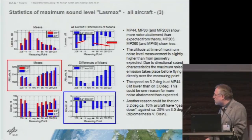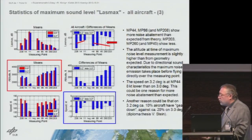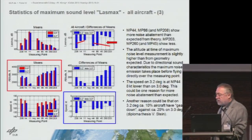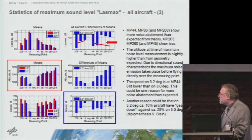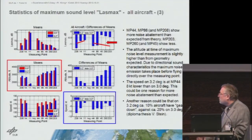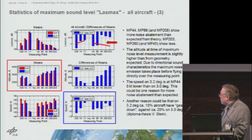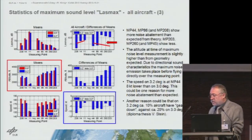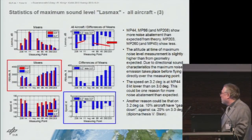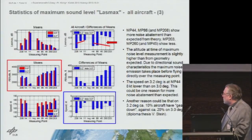We then tried to calculate the speeds. When using the 3.2-degree angle, aircraft become slower. Excluding measurement point 208 due to limited reference data, it's around 8 dB — but not at those measurement points just slightly before the final approach. We also analyzed the deployment of the landing gear, which was assessed through visual checks.